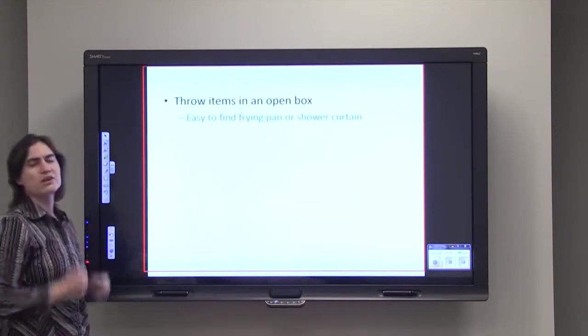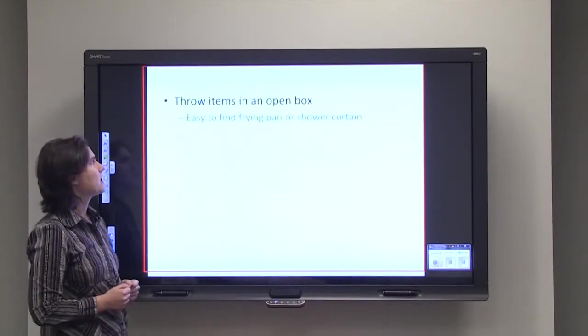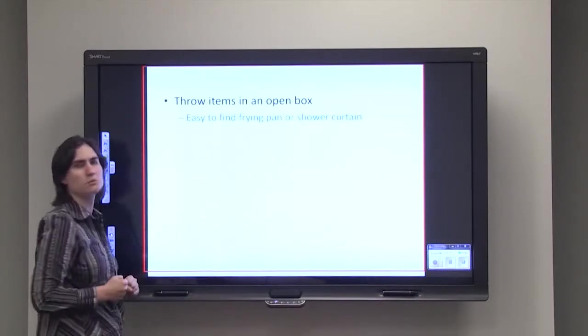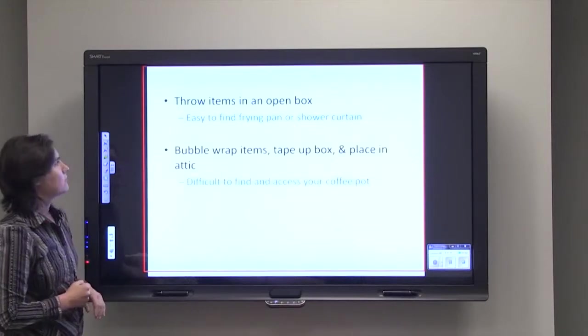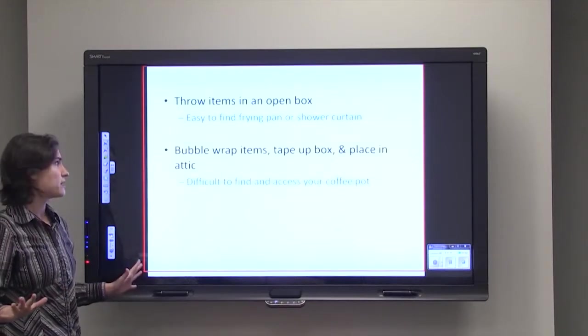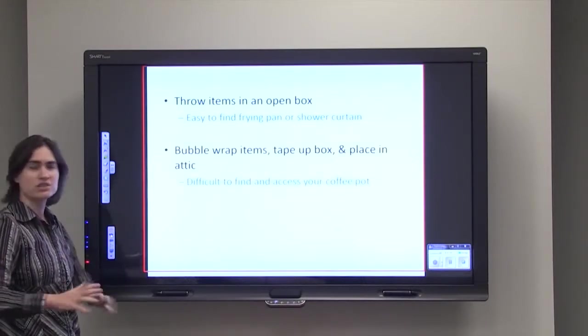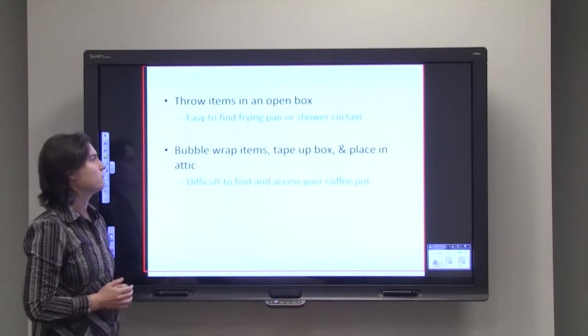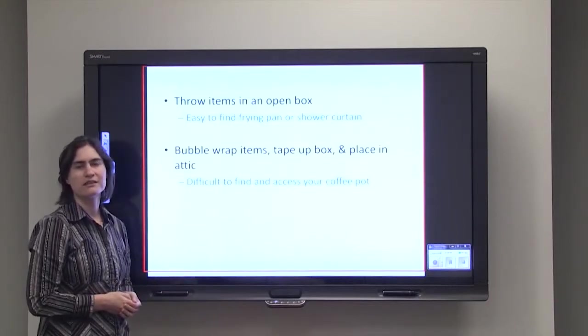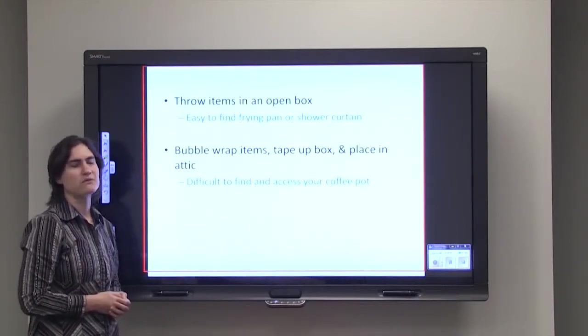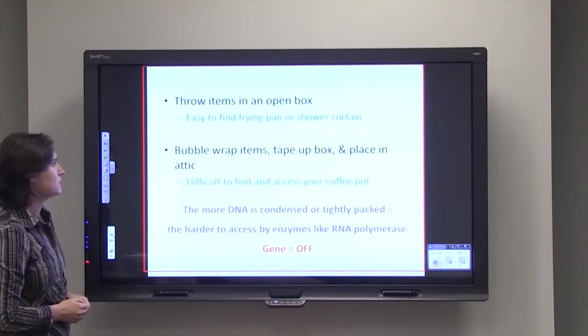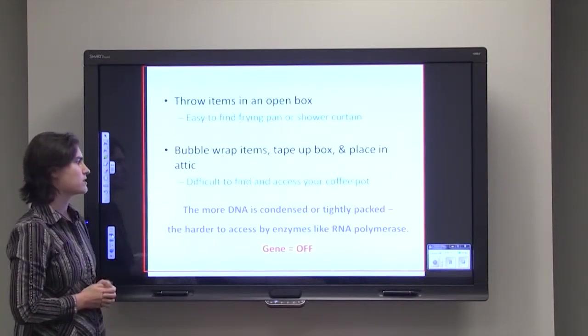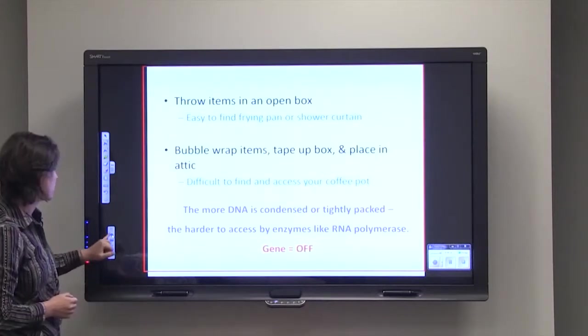So it's kind of like you throw a bunch of items into a box. And it's easy to find, look into the box, pull out a frying pan, look into the box, pull out a shower curtain. Now, if you had bubble-wrapped all of those items, if you had taped up that box and you had shoved it in the top of your attic, it would be very difficult to find and access like maybe your coffee pot. The exact same thing is happening with the DNA. So again, the more the DNA is condensed or tightly packed, the harder it is to access by those enzymes and the gene is turned off.